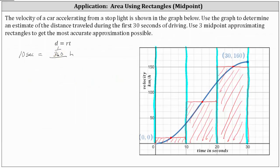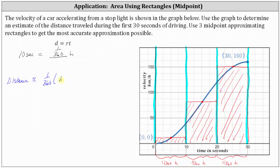So each subinterval has a width of one divided by 360 hours. To approximate the distance, we determine the area of the three rectangles. The distance traveled during the first 30 seconds is approximately equal to the area of the three rectangles, where the width is expressed as 1/360 hours. The height of the first rectangle we approximate as 12, so its area is 1/360 times 12.